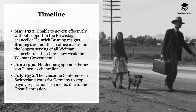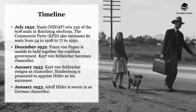In May 1932, unable to govern effectively without Reichstag support, Chancellor Heinrich Brüning resigned. His 26 months in office made him the longest-serving Weimar chancellor, illustrating how weak the Weimar government had become. In June 1932, Hindenburg appointed Franz von Papen as chancellor. In July 1932, the Lausanne Conference voted for Germany to stop paying reparation payments due to the Great Depression. That same month, the Nazis won 230 of 608 Reichstag seats, while the KPD increased from 54 to 77 seats.